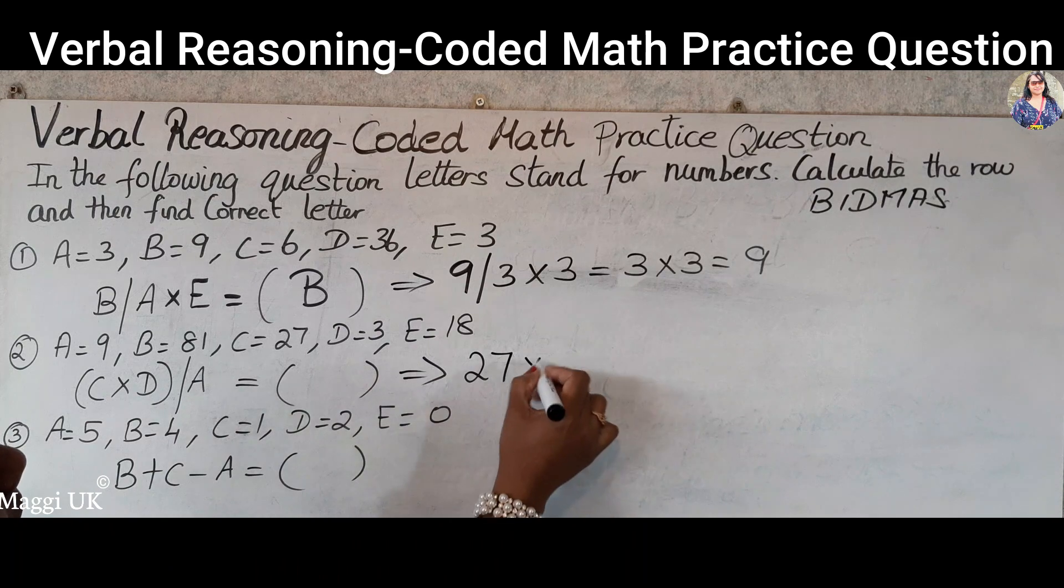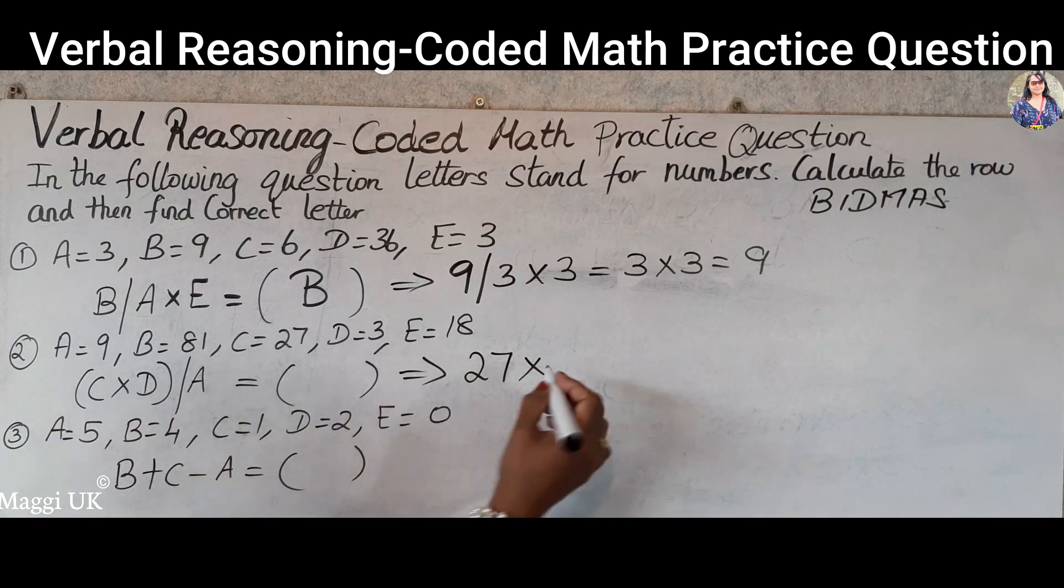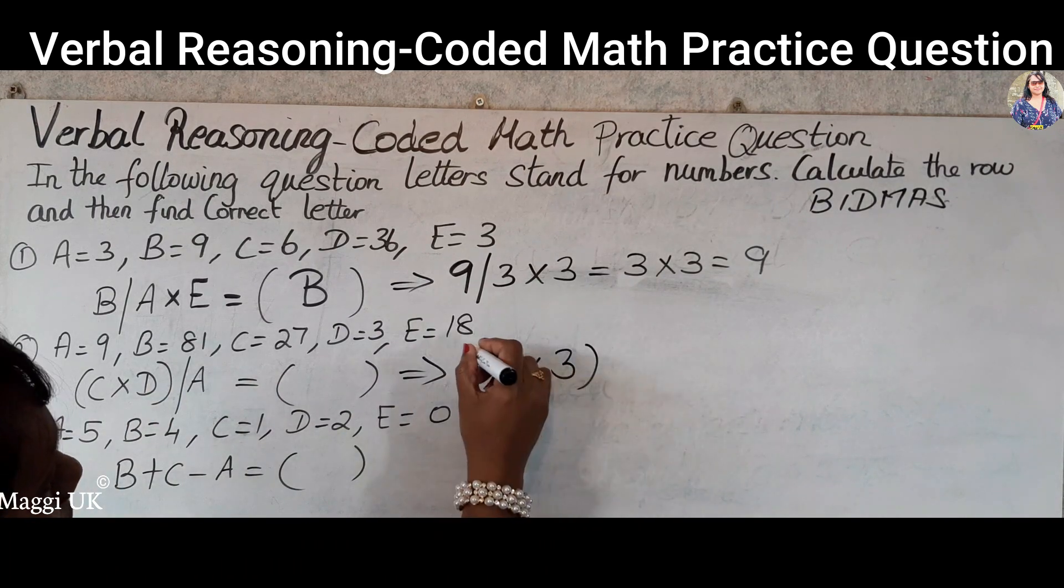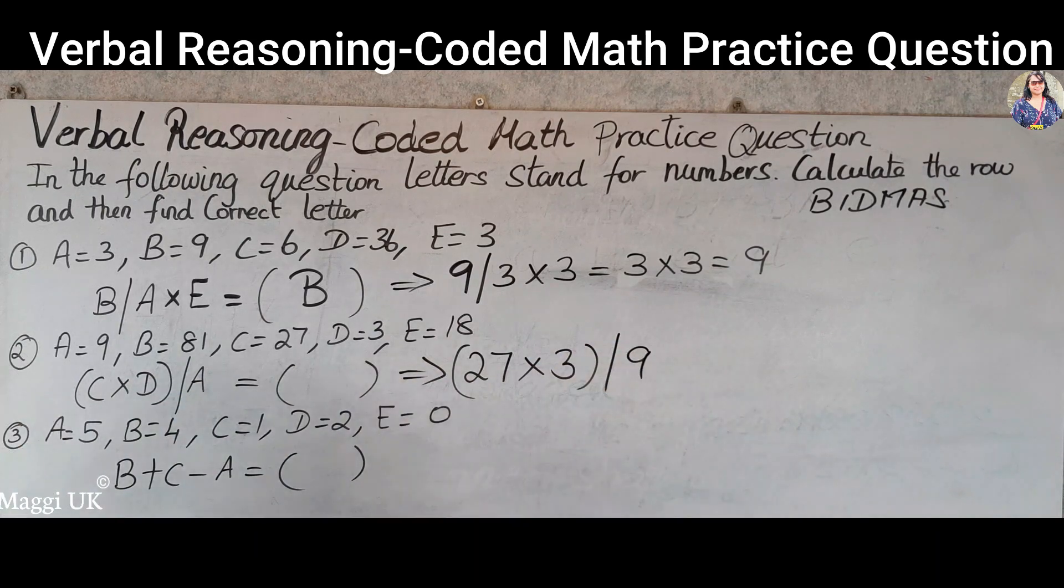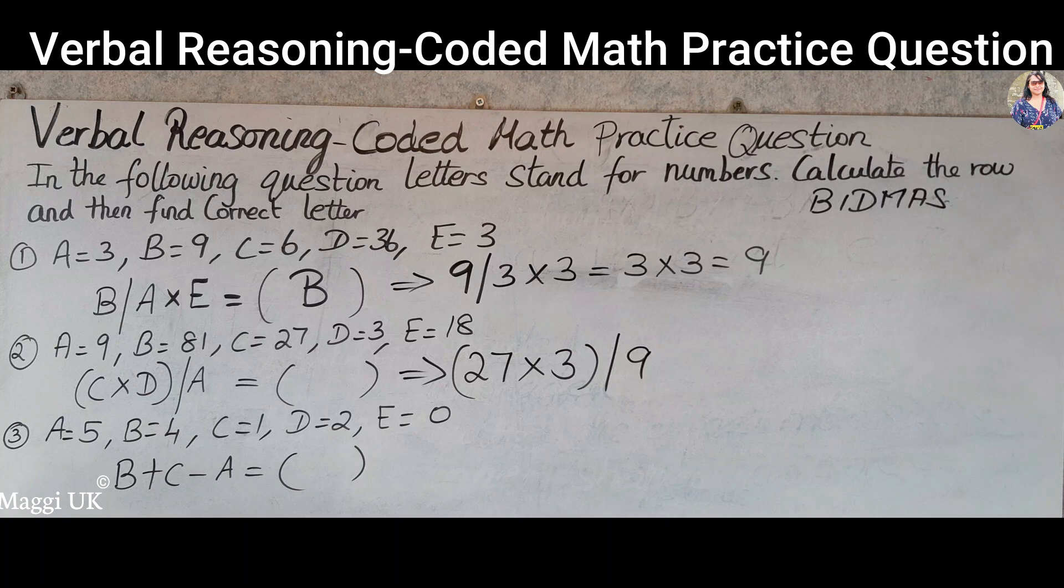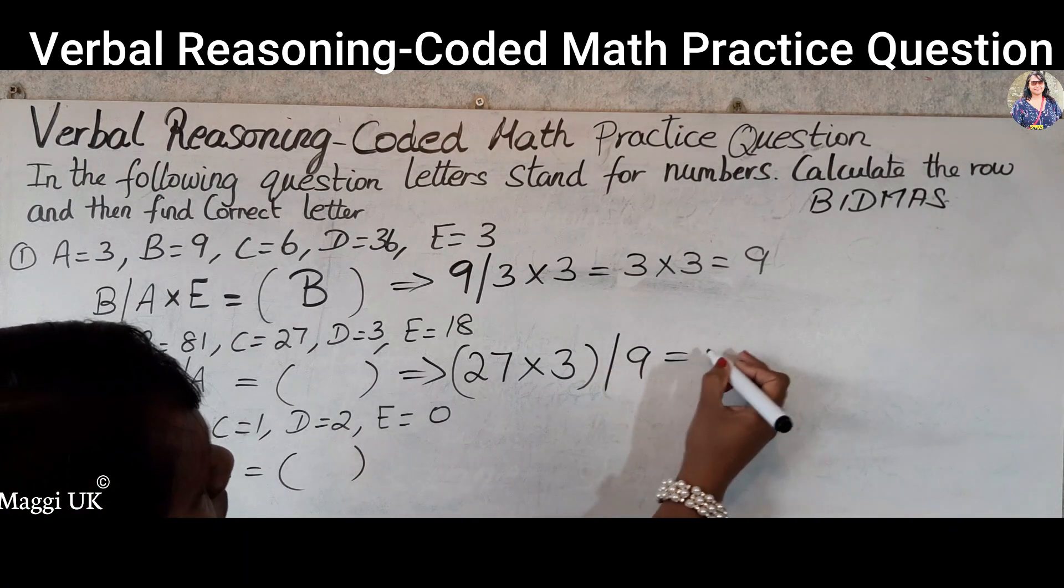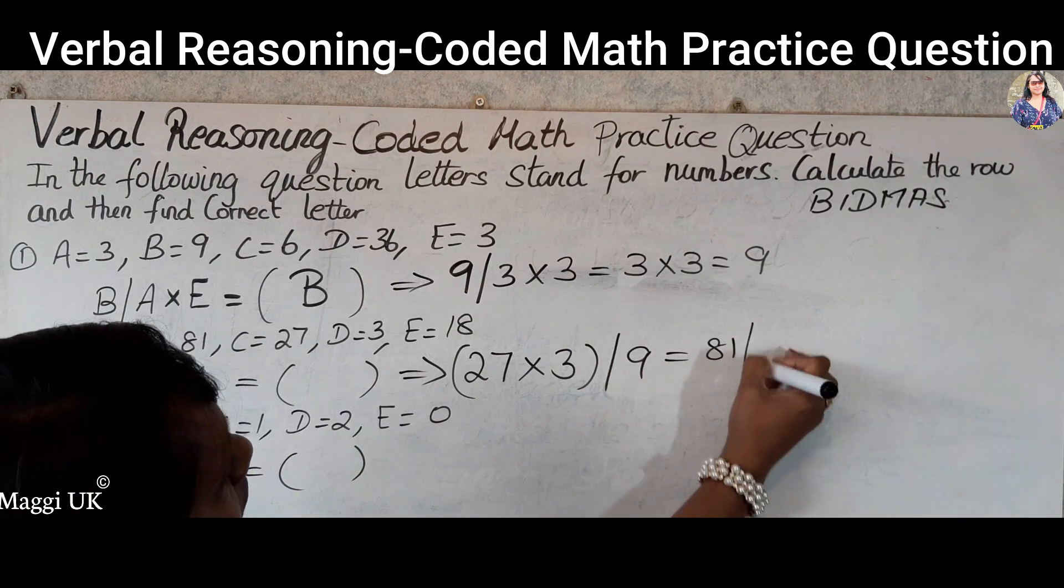And then we times that by D, which is 3. So you put the bracket, and then you divide by A, which is 9. So 27 times 3 is nothing but 81.